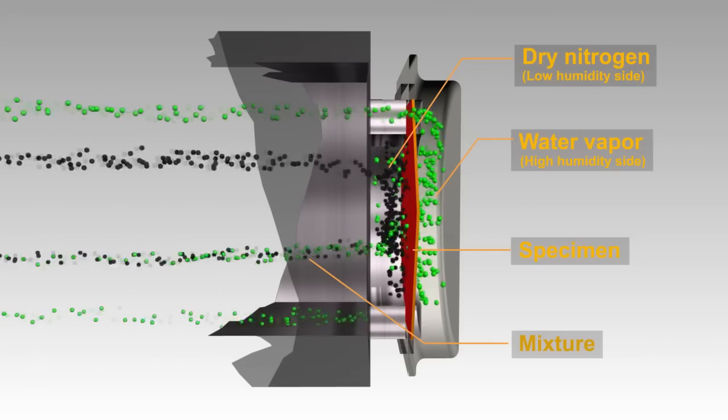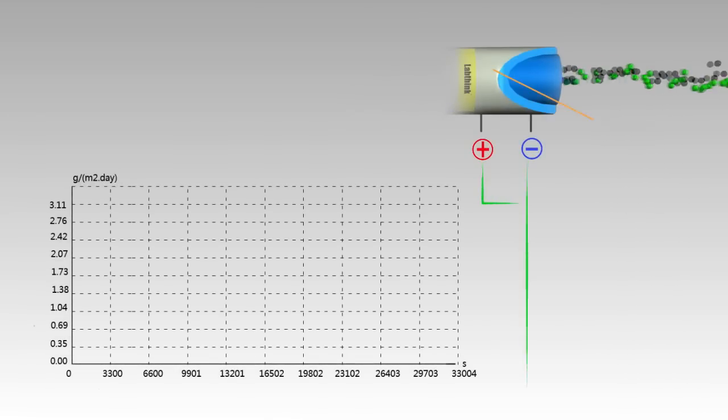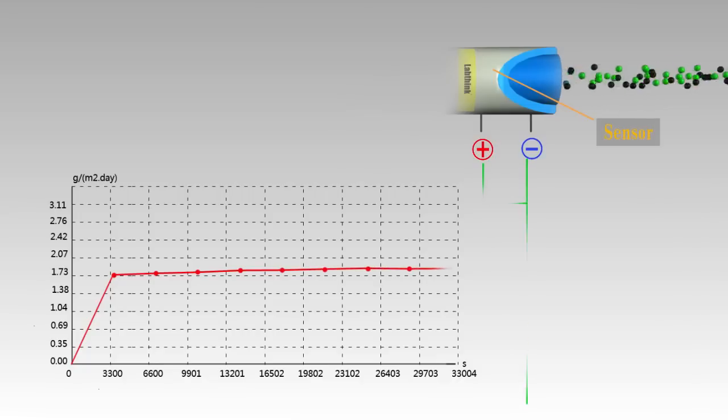The diffused water vapor molecules enter into the electrolytic sensor and electrolyze with phosphorus pentoxide proportional current, based on which the water vapor transmission rate is obtained by analyzing the electrical signal.